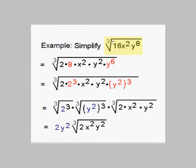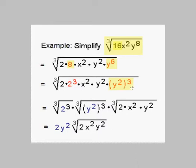Now if we look at 16, it is not a perfect cube, but 8 is. So we write 16 as 2 times 8, where 8 is our perfect cube. x squared — there is nothing we can do with x squared. But y to the 8th has a perfect cube embedded in it. If we write y to the 8th as y squared times y to the 6th, y to the 6th is y squared quantity cubed. So we do have a perfect cube in y to the 6th: it is y squared quantity cubed. And our 8 is 2 cubed.